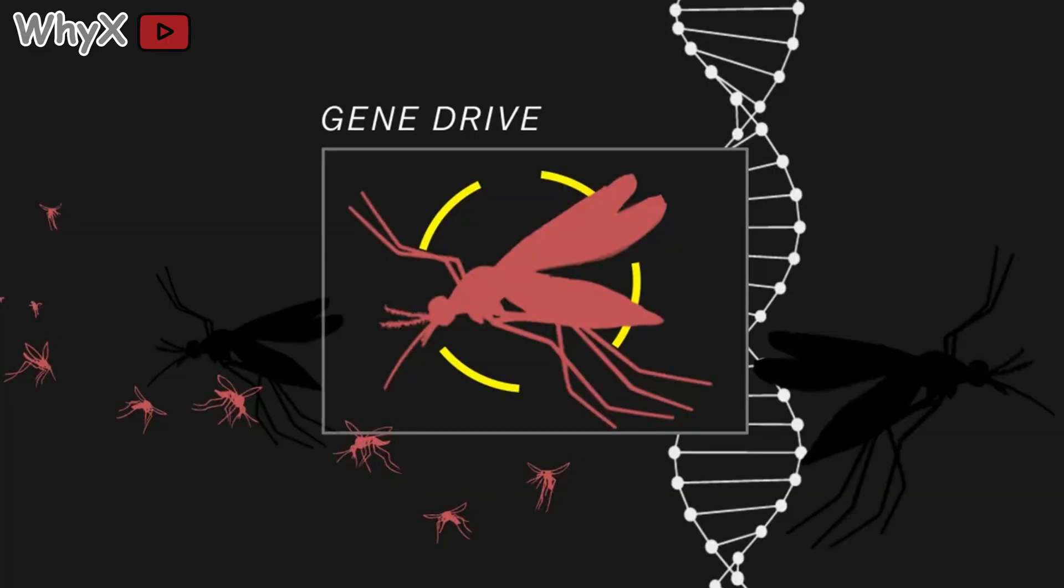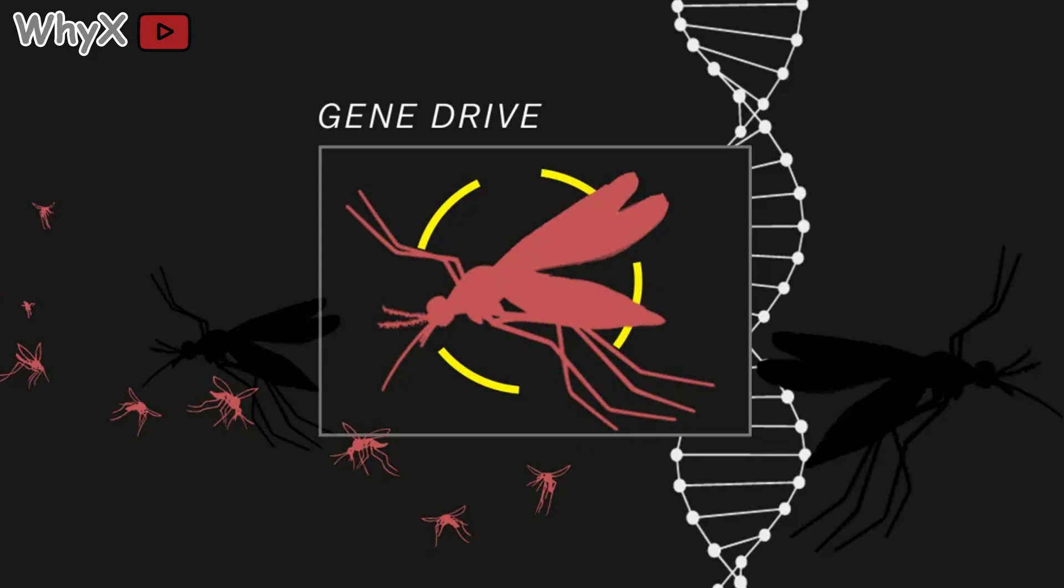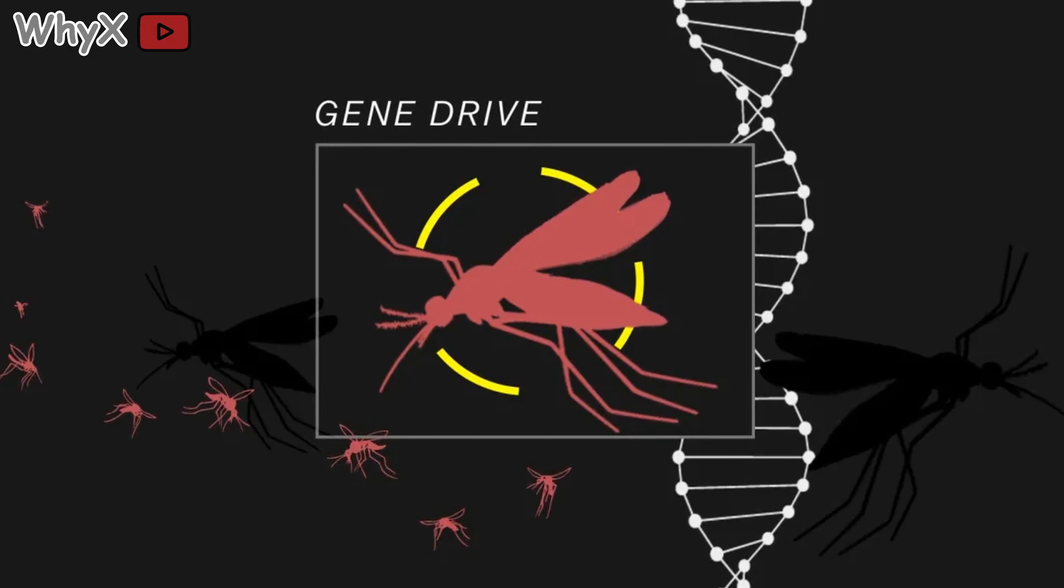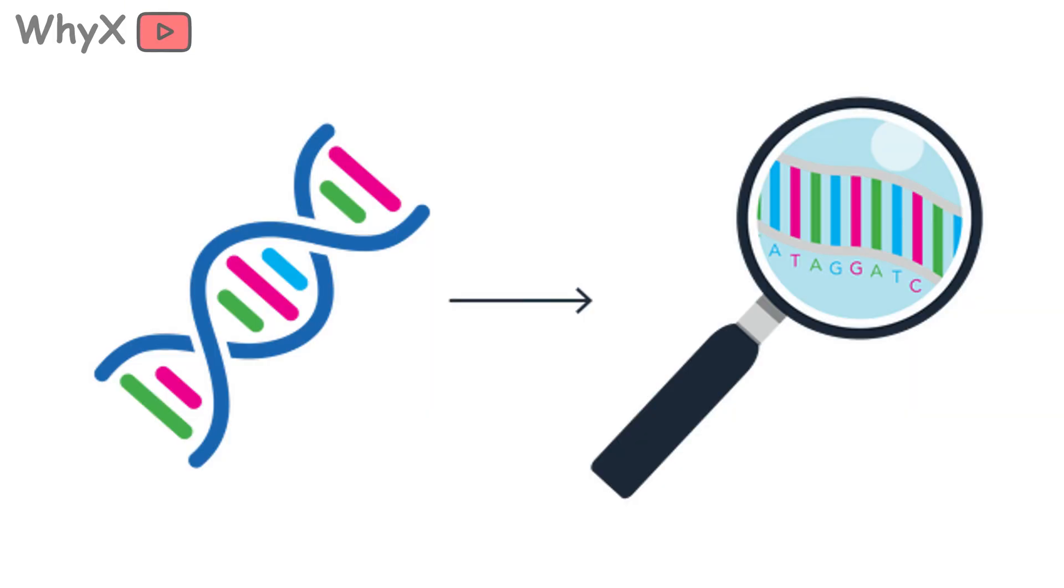And it's not just about humans. Scientists have already edited mosquitoes to resist carrying malaria, potentially saving millions of lives. Crops are being engineered to withstand drought, pests, and climate change. The genome is the ultimate toolkit for survival in a turbulent world.